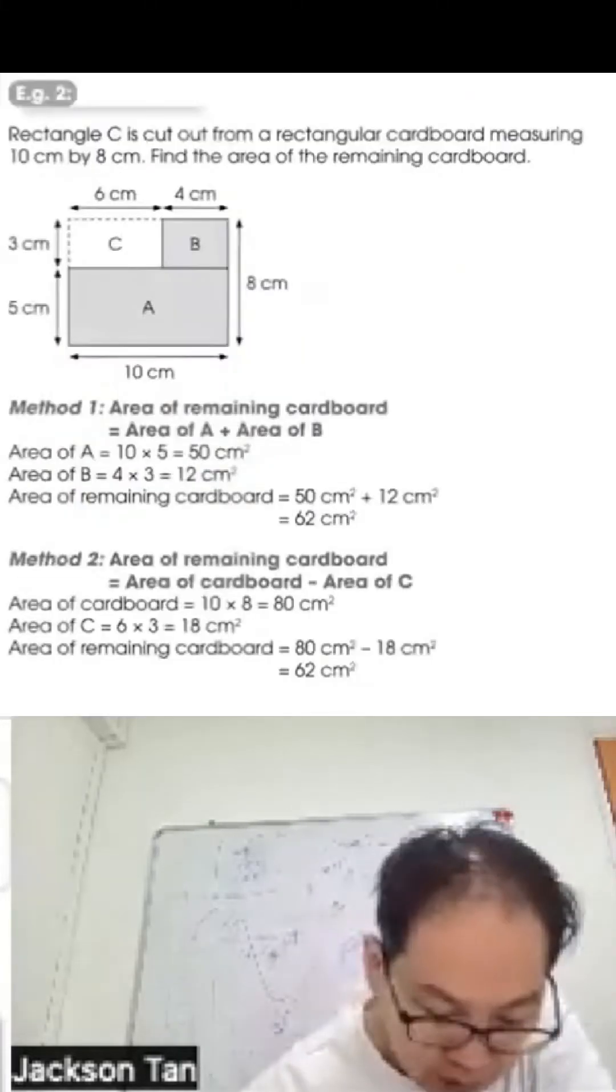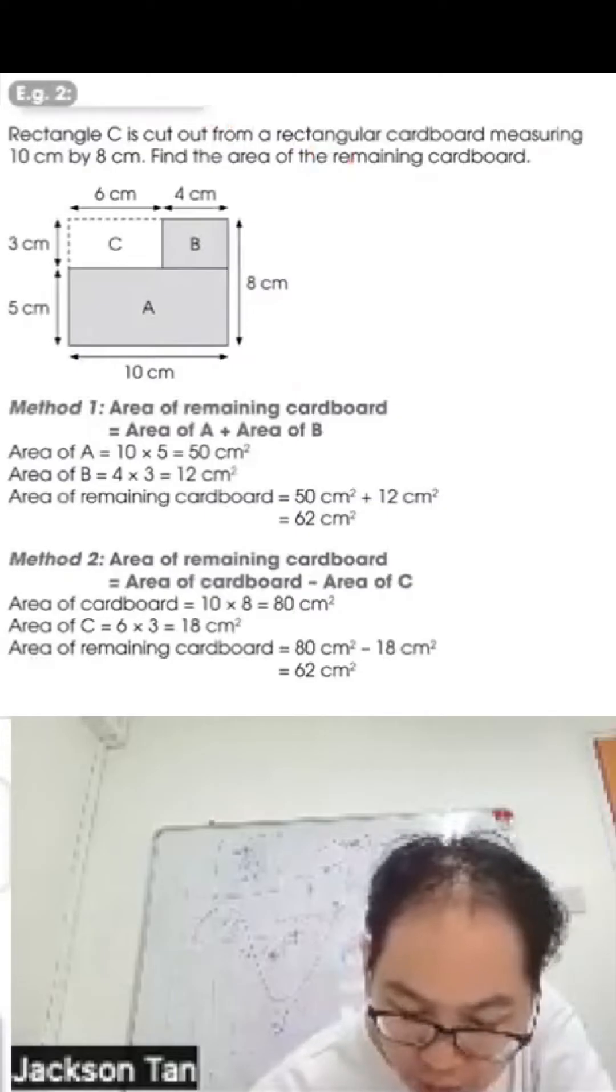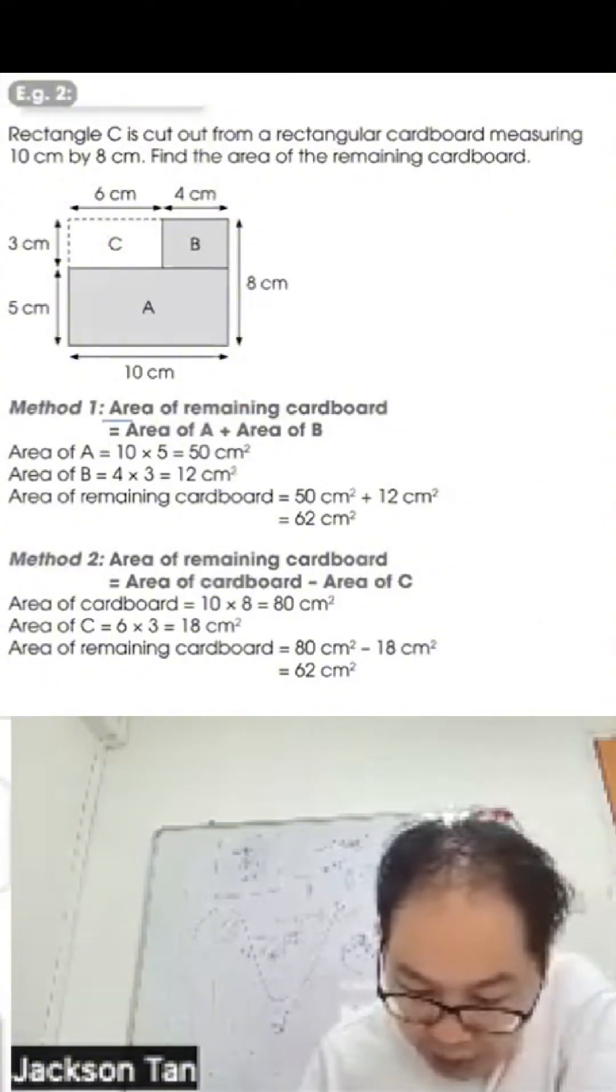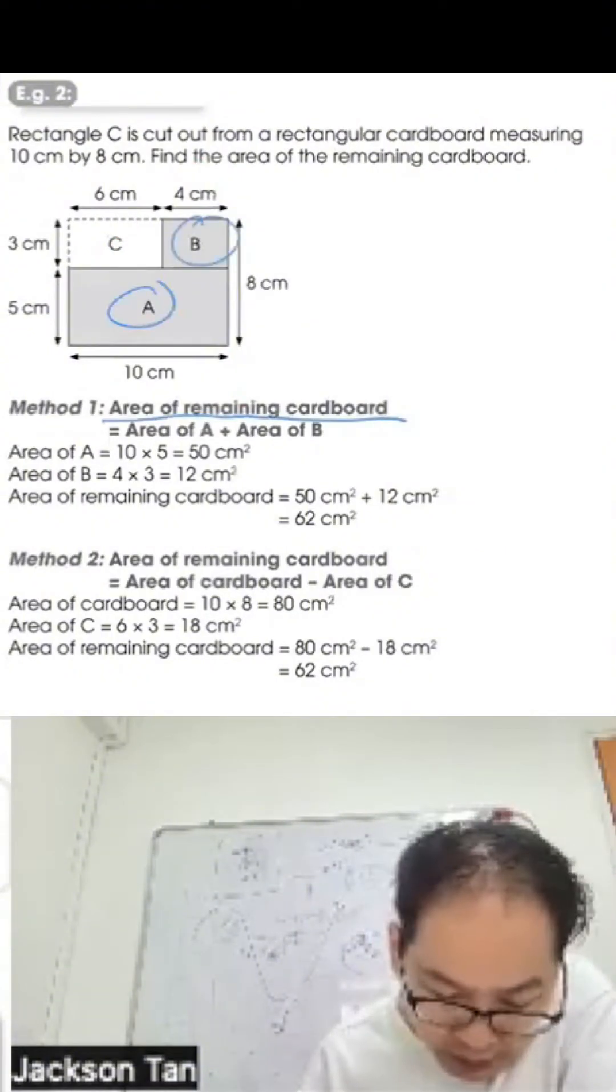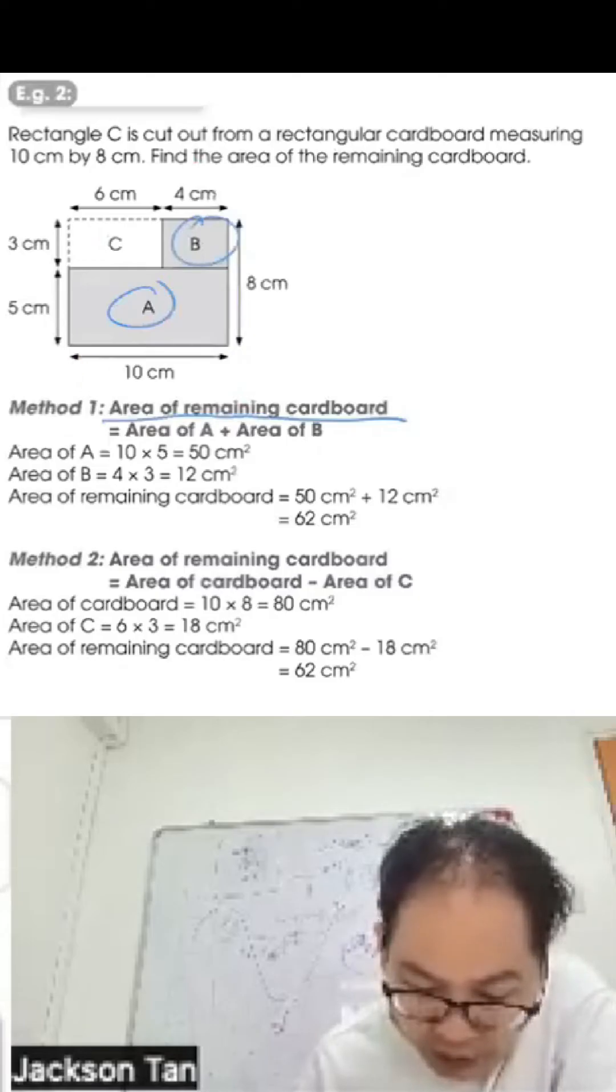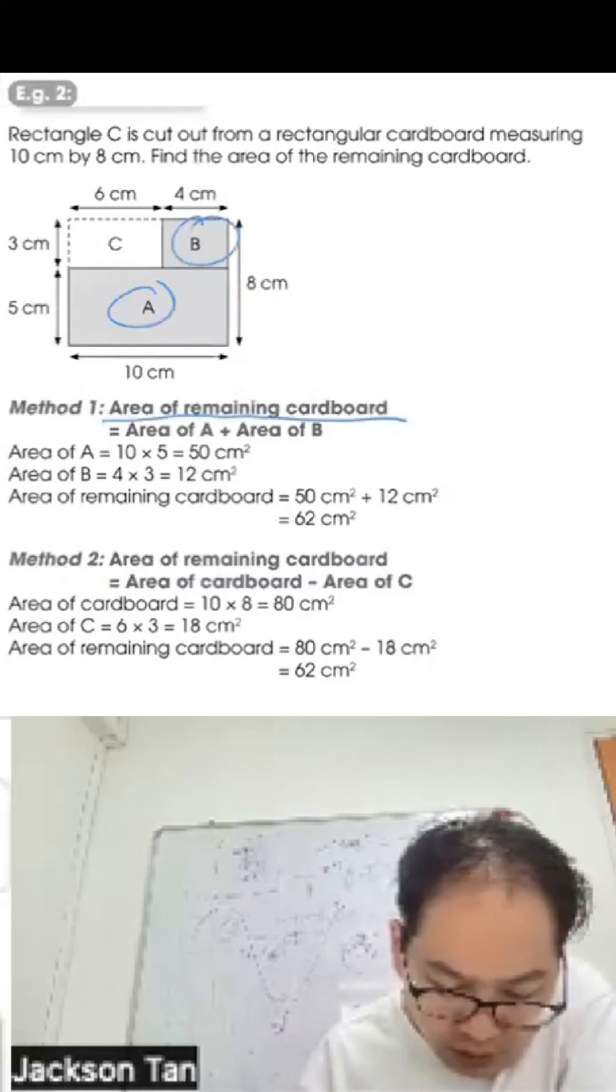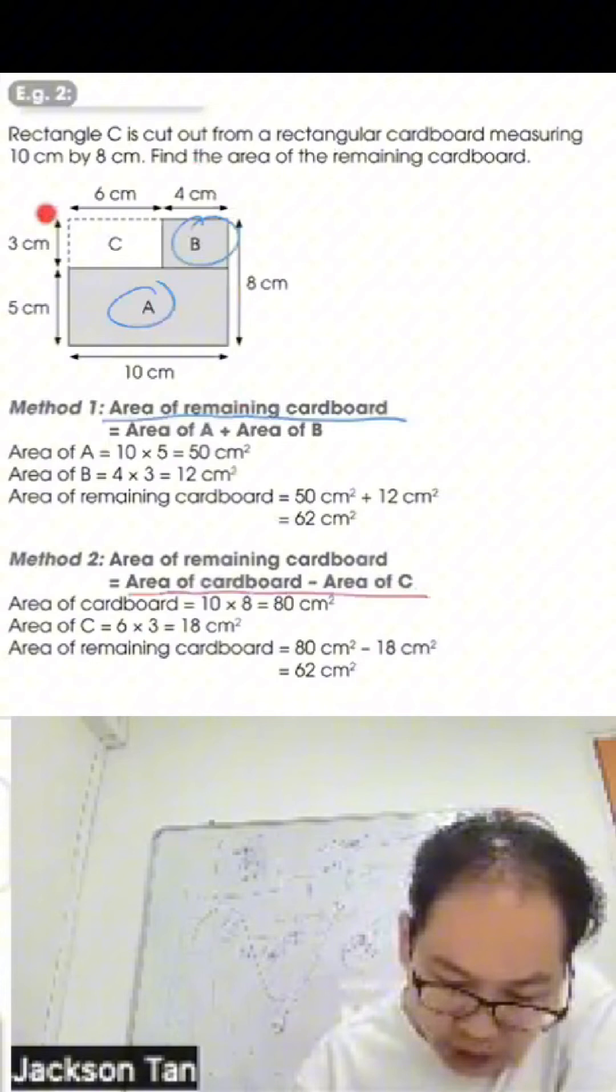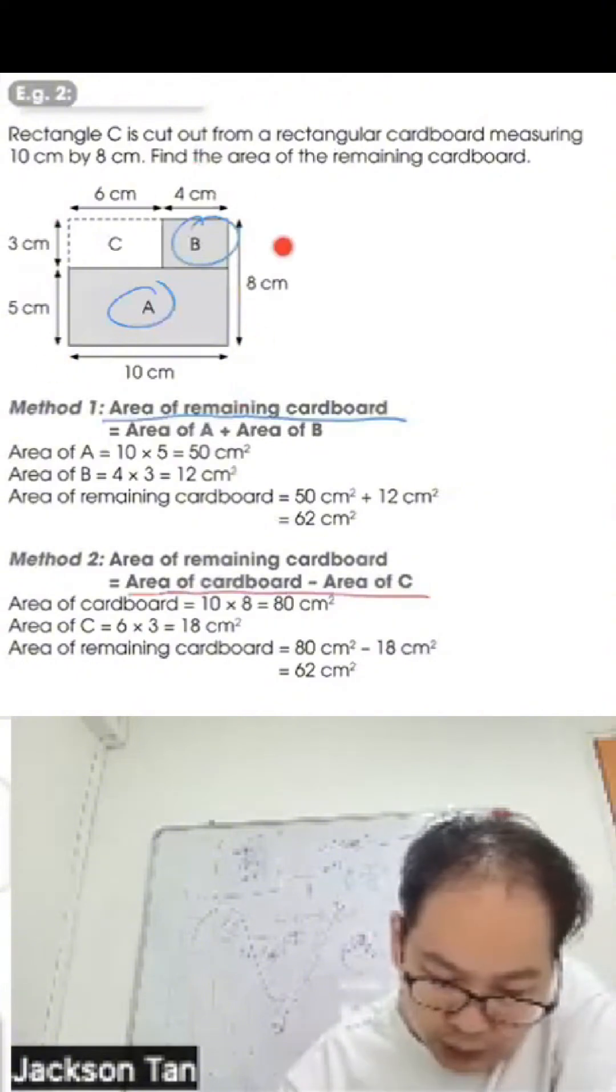Example 2: Rectangle C is cut out from a rectangular cardboard measuring 10 cm by 8 cm. Find the area of the remaining cardboard. Method 1: Area of remaining cardboard equals area of A plus area of B. Area of A is 10 times 5 equals 50, area of B is 4 times 3 equals 12, together 62 square cm. Method 2: Area of the whole cardboard is 10 times 8 equals 80, area of C is 6 times 3 equals 18, so 80 minus 18 equals 62 square cm.